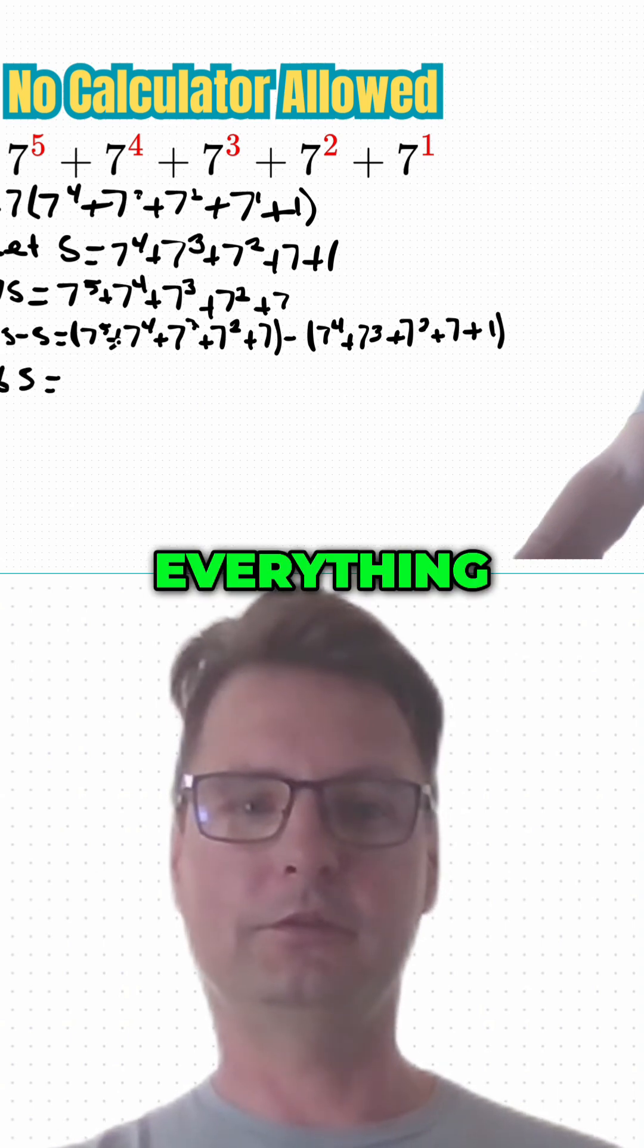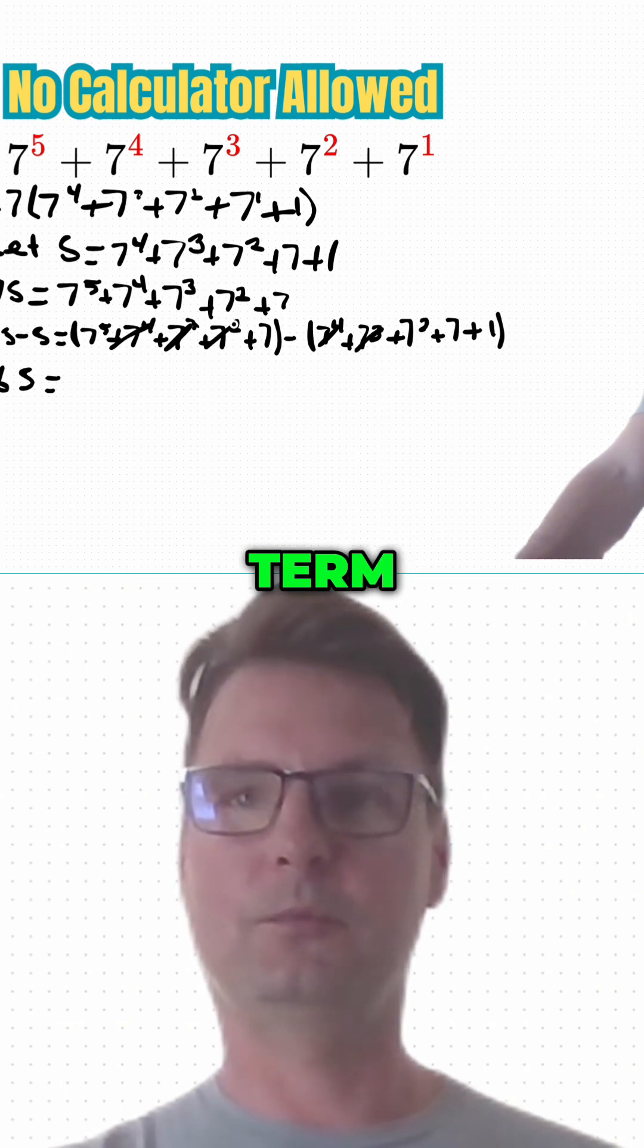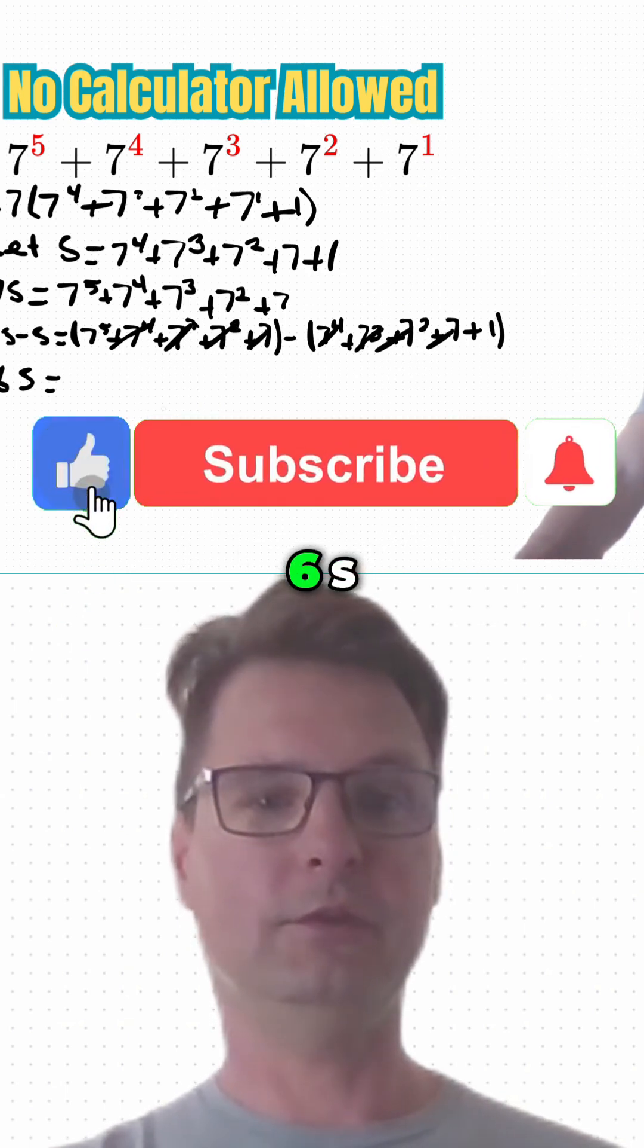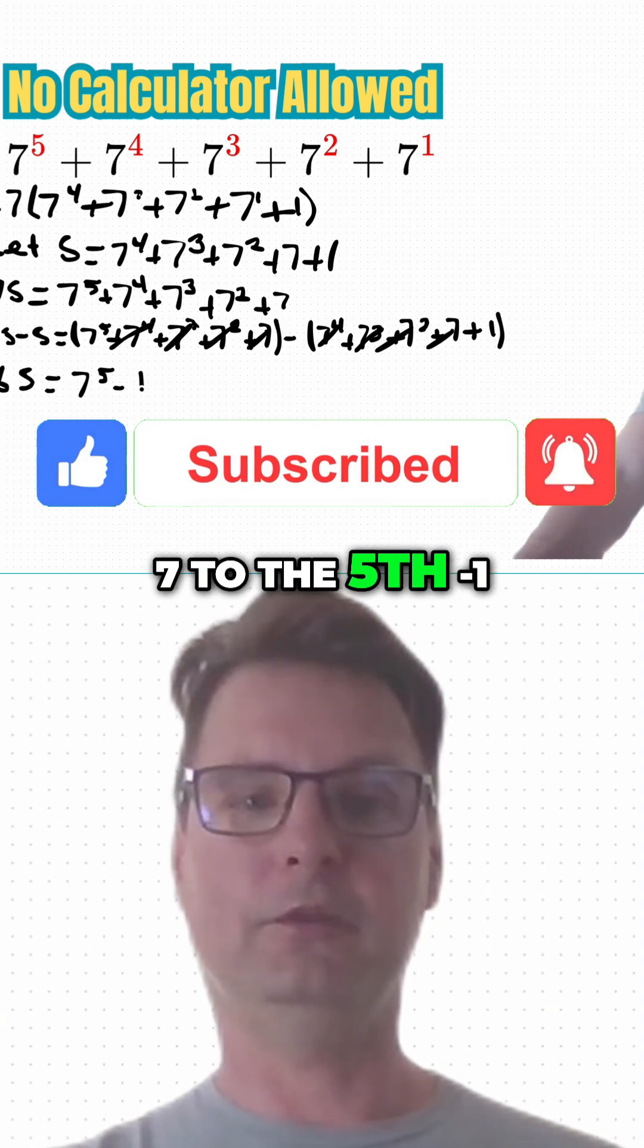Everything except the first and last term. So, 6S equals 7 to the fifth minus 1.